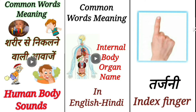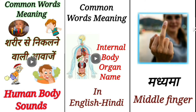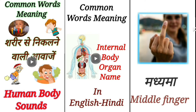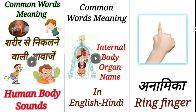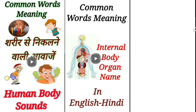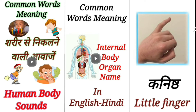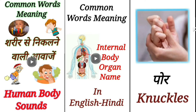Tarjani – Index Finger. Madhyama – Middle Finger. Anamika – Ring Finger. Ghanisht – Little Finger. Poor – Knuckles.